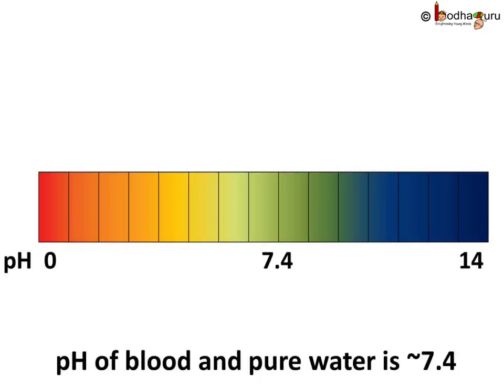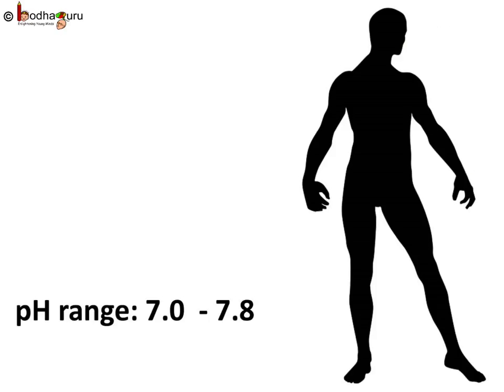The pH of blood and pure water is around 7.4. Our body works within the pH range of 7.0 to 7.8. Living organisms can survive only a narrow range of pH change.